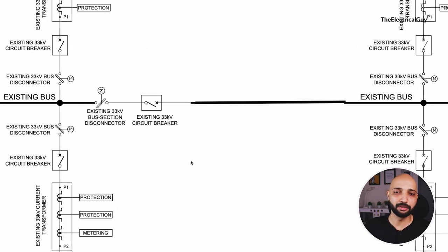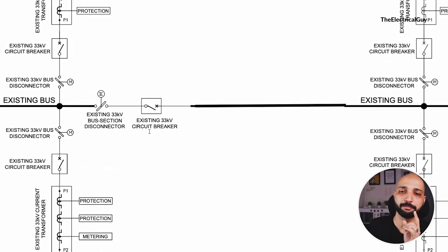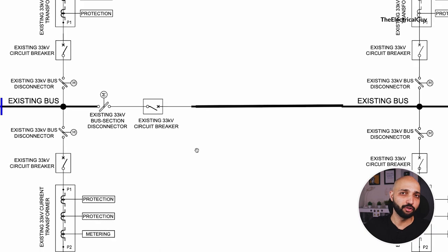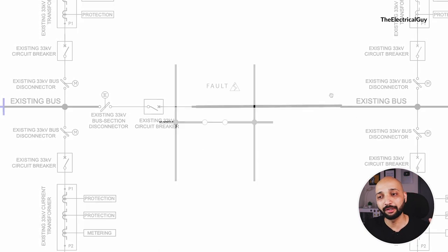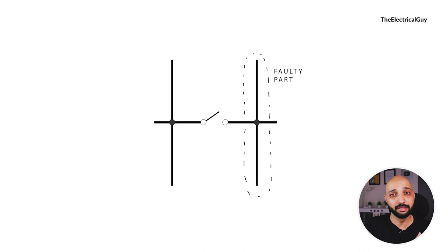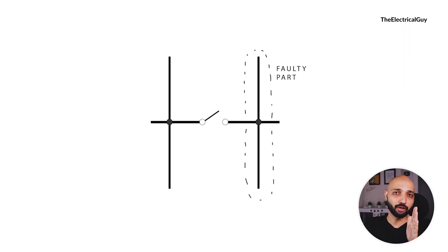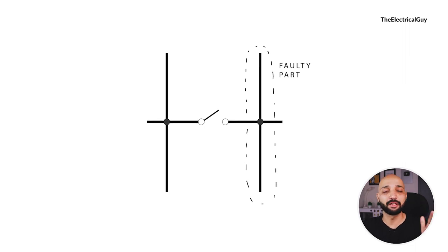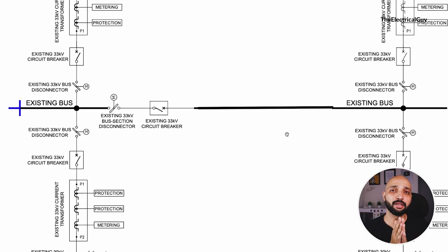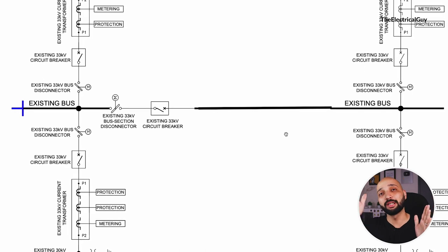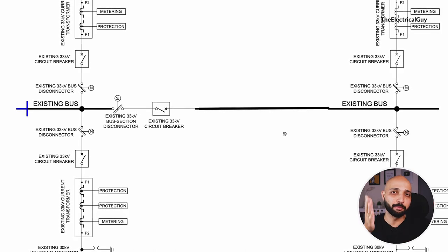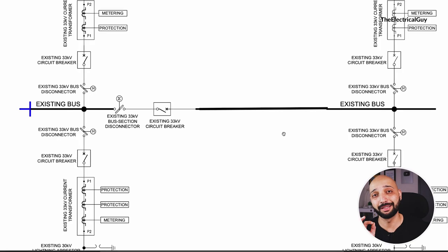Now, what is the bus sectionalizer? We are using a breaker and isolator in the center. Let's say there are two bays — one on the right hand side and one on the left hand side. If there is a fault on the right hand side, we can open the circuit breaker and then open the disconnector to isolate the faulty part of the bus, and then continue supplying from the left hand side of the bus bar. This is the advantage of the bus sectionalizer — it creates two sections of the bus so that in case of a fault on one side, the other side can be bifurcated and supply can be continued from it.